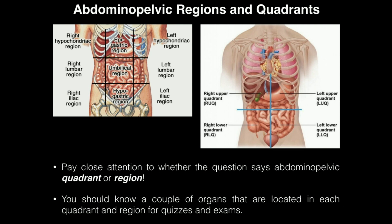Now, we have two kinds of divisions of the abdominal pelvic area that you need to know for quizzes and exams. On the left we have abdominal pelvic regions — notice there are nine of them. On the right we have abdominal pelvic quadrants — 'quad' means four.